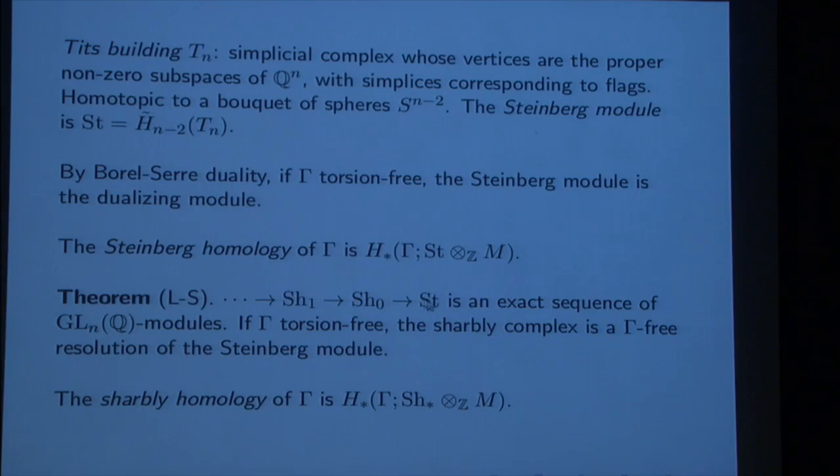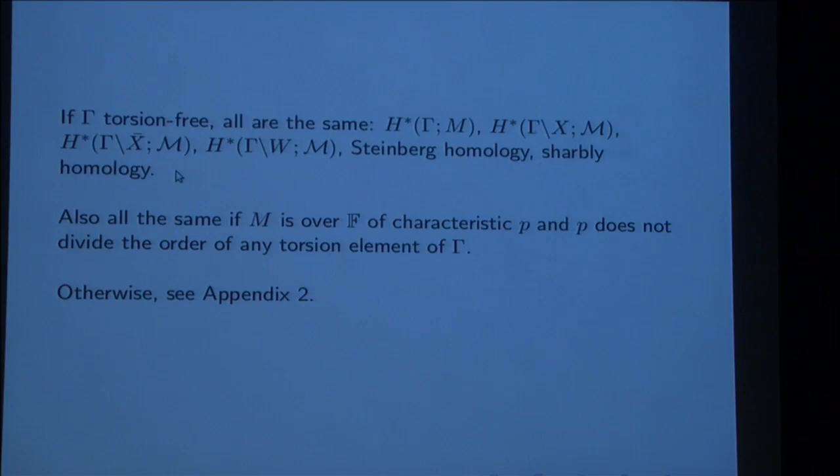Part of the interest of the Sharbley complex is that it connects to the Steinberg module and therefore to the whole geometry of the Borel-Serre. I'm going to introduce the Tits building T_N. This is the simplicial complex where you fix the vector space Q^N. Each subspace of Q^N is a point in a simplicial complex. Each flag in Q^N is a simplex in the simplicial complex. According to the Solomon-Tits theorem, this is homotopic to a bouquet of spheres. The Steinberg module is the reduced homology of the Tits building. The Borel-Serre compactification, you're gluing on boundary components exactly corresponding to the elements of the Tits building.